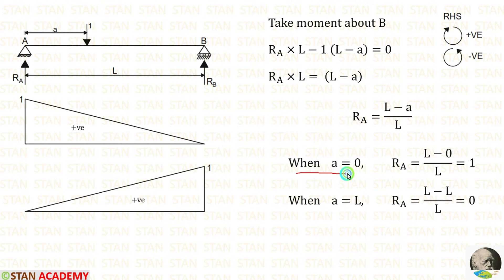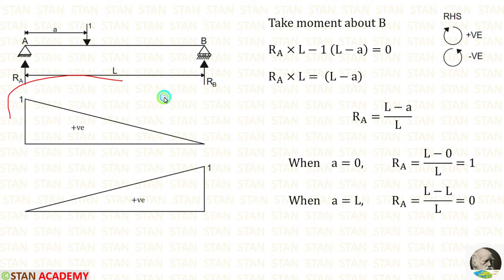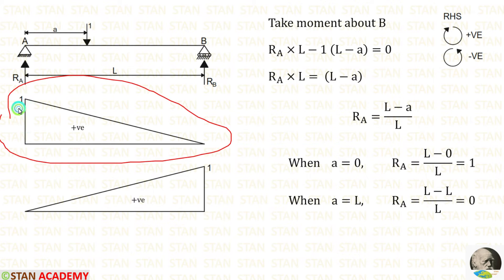When A is equal to 0, R_A will be 1. When A is equal to L, R_A will be 0. Using that, we can make the influence line diagram. When A is equal to 0, it is 1. When A is equal to L, it will be 0.